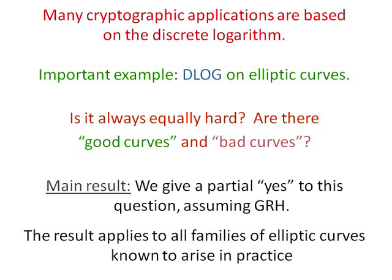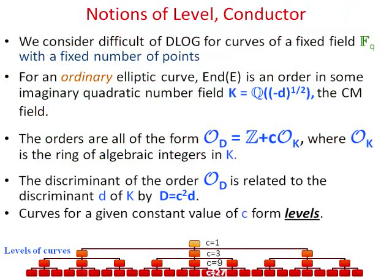Namely, we study elliptic curves which are generated over the same field and which have the same number of points. This is typically how cryptographers sample curves. To make this precise, we need to break the curves up into families called levels. An important theorem of Tate states that the elliptic curves with the same number of points over the same field lie in an isogeny class.